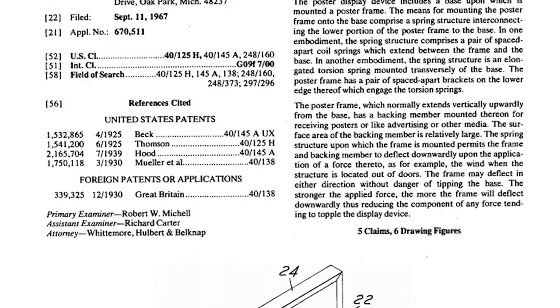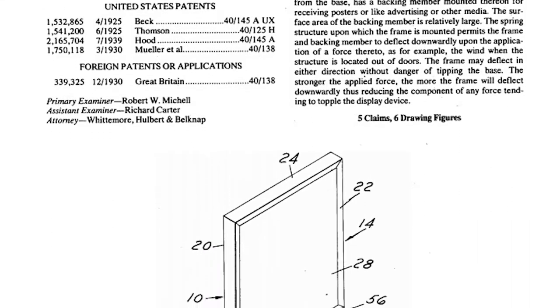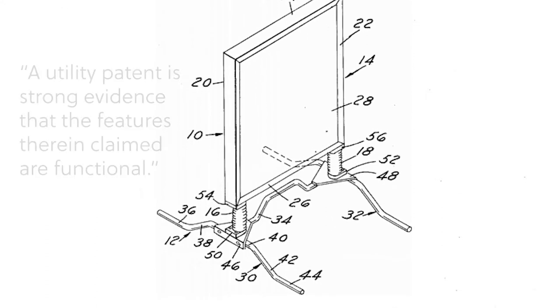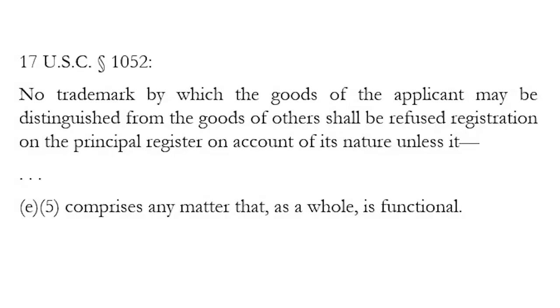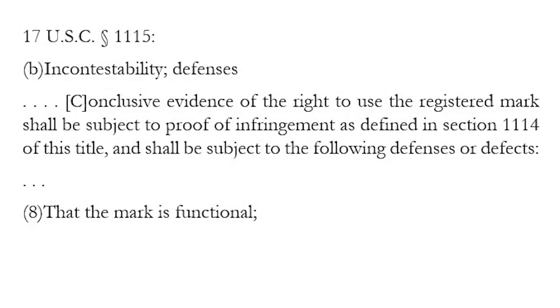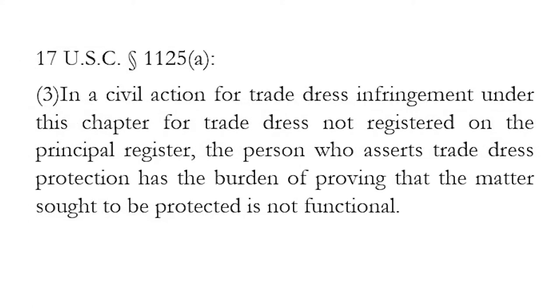Of course, overlaps are still possible. The Supreme Court in Traffix doesn't rule out the possibility that something that was the subject of patent protection could still get trademark protection after patent expiration, but it makes it much more difficult and less likely. The functionality doctrine, like so much in trademark law, has its origins in the common law and is now codified in various places in the Lanham Act. Section 2(e)(5) prevents the registration of functional marks. Section 33(b)(8) makes functionality a defense to an infringement claim. Section 43(a)(3) says that if there's an action for an infringement of an unregistered trade dress, the plaintiff has the burden of showing that the dress in question is not functional.